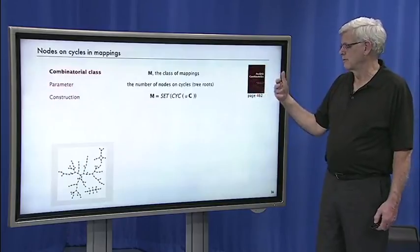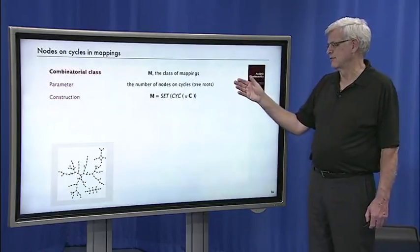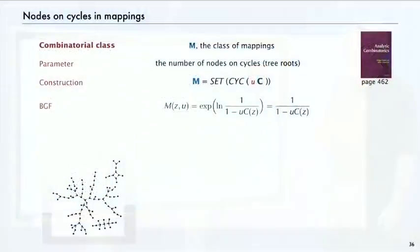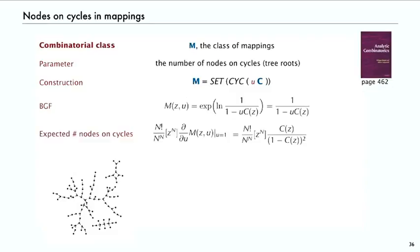Or nodes on cycles, well, we can use bivariate generating functions. Mark the nodes on cycles with u. So then we get a bivariate generating function. e^(log(1/(1-uc))). And now we can put in, to get the expected number of nodes on cycles, we have to differentiate with respect to u and evaluate at one. So that gives us an expression in terms of the generating function for Cayley trees.